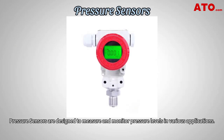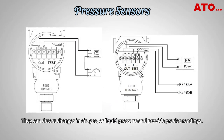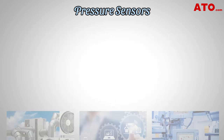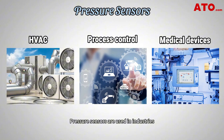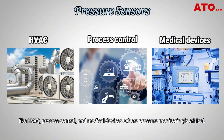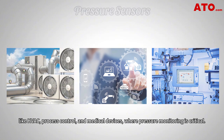Pressure sensors are designed to measure and monitor pressure levels in various applications. They can detect changes in air, gas or liquid pressure and provide precise readings. Pressure sensors are used in industries like HVAC, process control and medical devices, where pressure monitoring is critical.